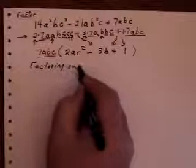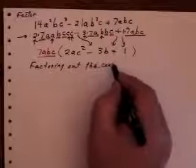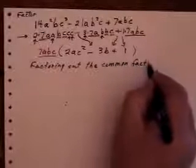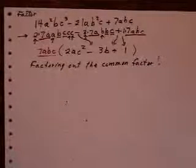And it is the very first thing that you should look for in all factoring. Look for a common factor. Rule number 1. Factoring out the common factor.